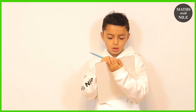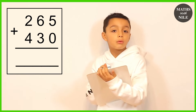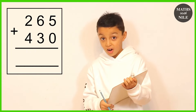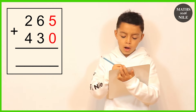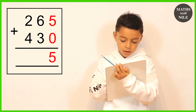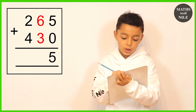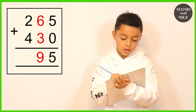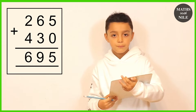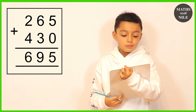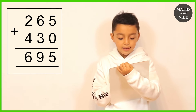Question number two is 265 plus 430. Even though this question goes into hundreds, it doesn't mean it's going to be much harder. We always start with the units: 5 plus 0 is 5, put our 5 underneath the units column. Then 6 plus 3 is 9, put our 9 underneath the tens column. Then 2 plus 4 is 6, put that under the hundreds column. So 265 plus 430 equals 695.